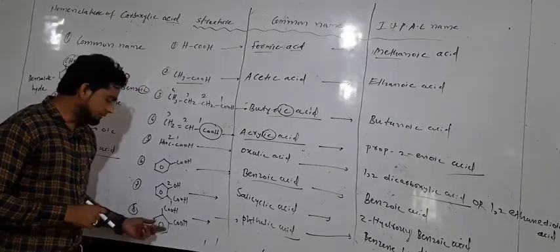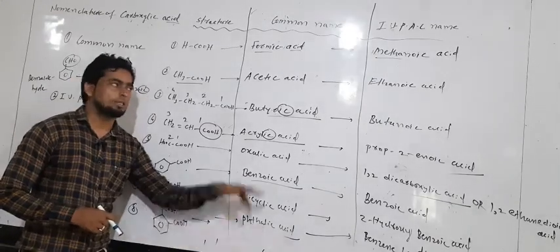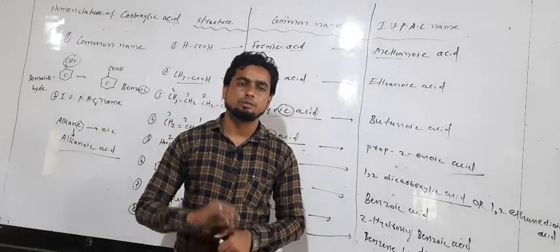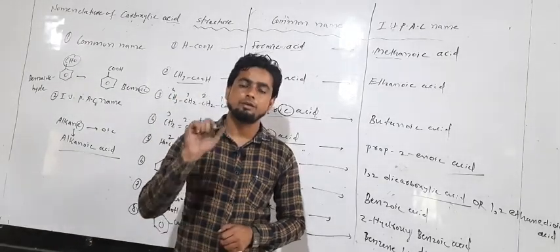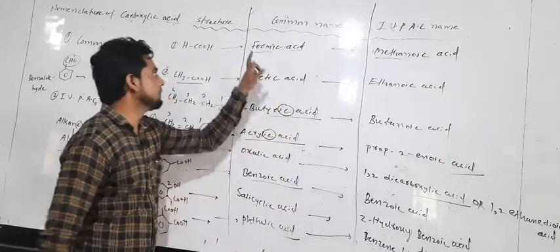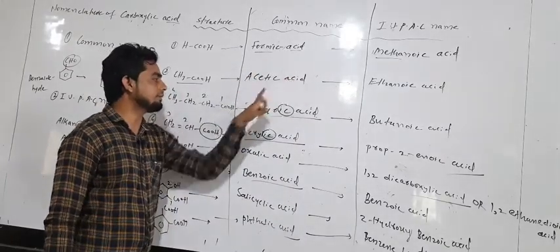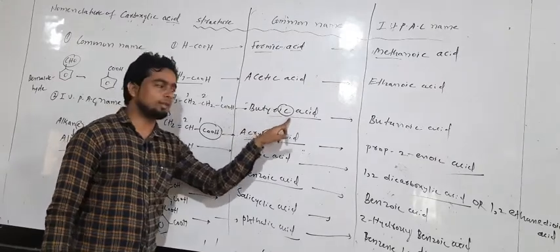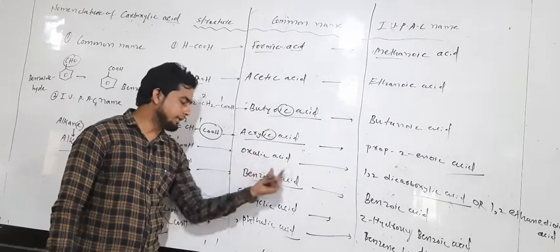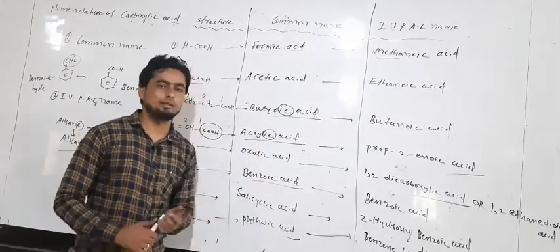Benzene attached to two acid groups on the aromatic ring is called phthalic acid. So in summary, for all carboxylic acid common names we use the suffix '-ic' and the last word 'acid' — for example, formic acid, acetic acid, butyric acid, acrylic acid, oxalic acid, benzoic acid, salicylic acid, and phthalic acid.